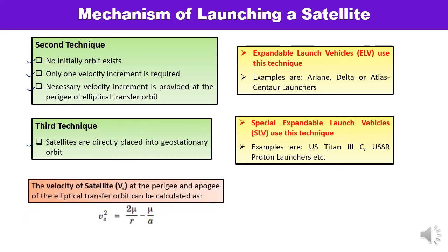If you need to calculate the satellite velocity at any point — at perigee or at apogee — in an elliptical transfer orbit, you must remember the formula: Vs = √(2μ/R − μ/A), where μ is the product of G and M, R is the height at which the satellite is located, and A is the semi-major axis. Using this formula you can calculate the velocity with which a satellite is moving in an elliptical transfer orbit.